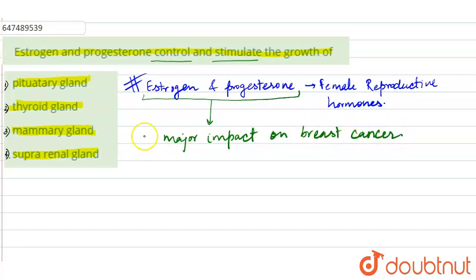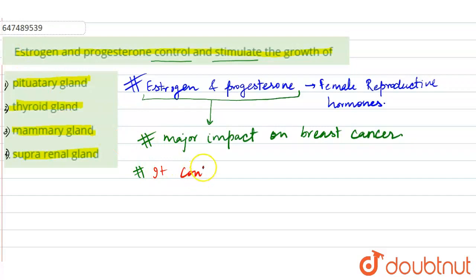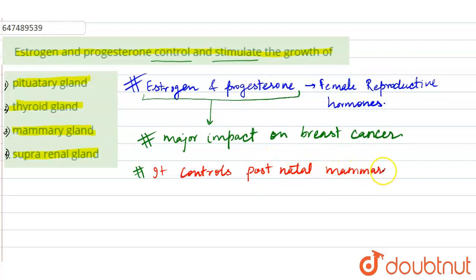ان کا بہت important role ہوتا ہے breast cancer کے development کے لئے. So actually یہ کیا کرتے ہیں؟ یہ control کرتے ہیں. ان کا کام یہ ہوتا ہے کہ estrogen and progesterone کا — it controls postnatal mammary gland growth and development.